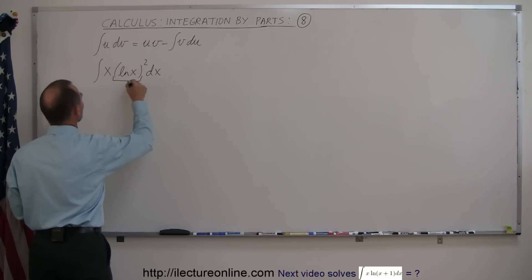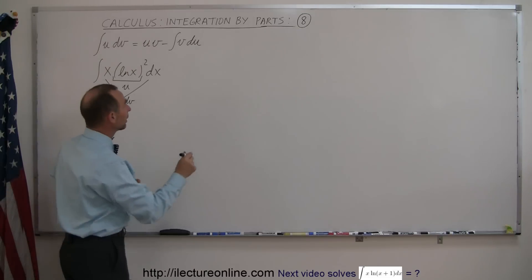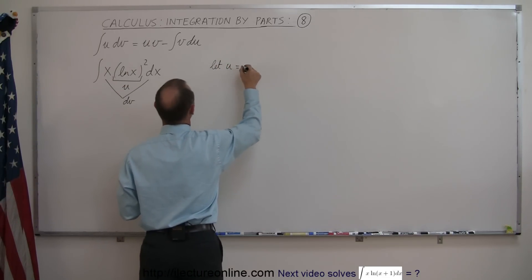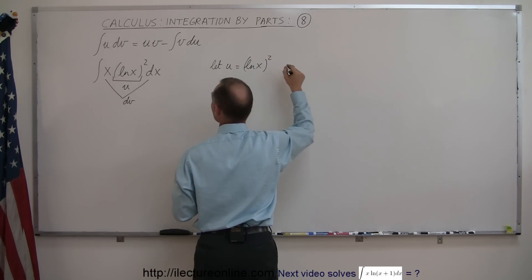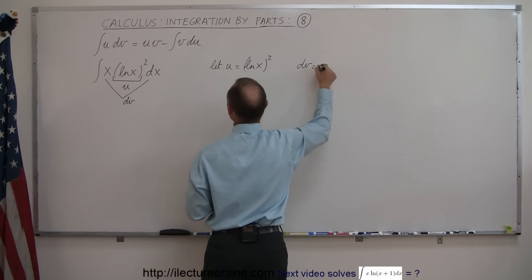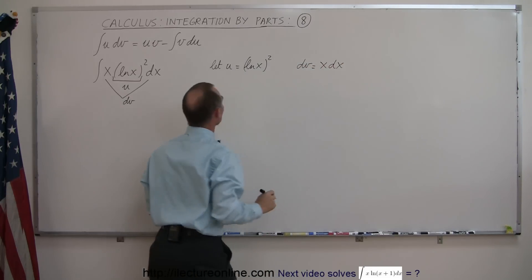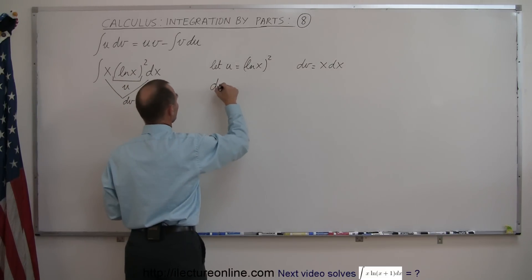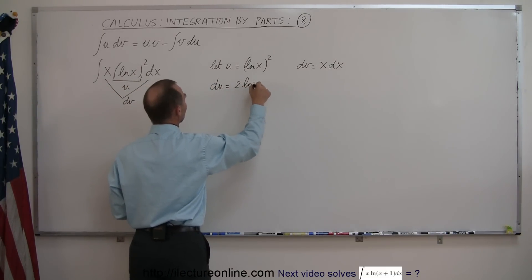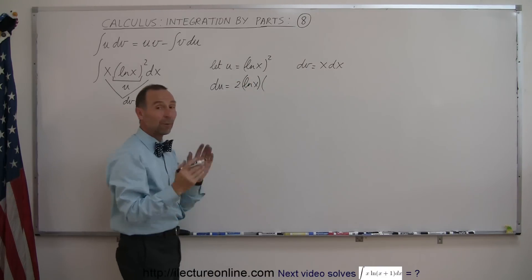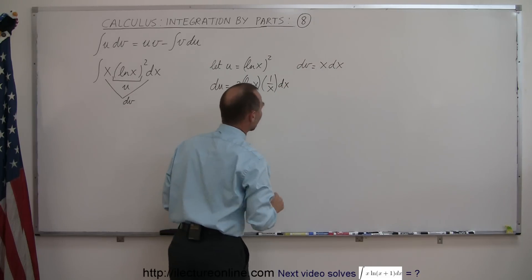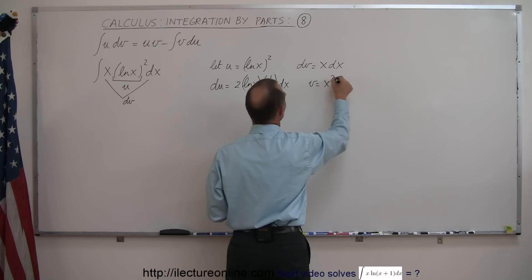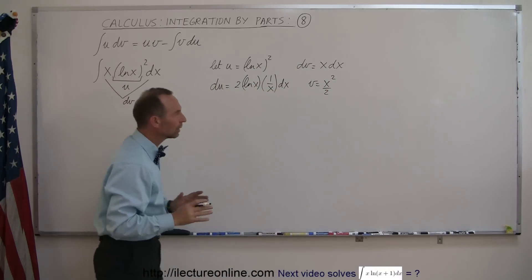I'm going to call this portion u, and then x times dx we're going to call dv, and see what we end up with. Let u equal the natural log of x quantity squared, and the dv is going to be x times dx. So du would be 2 times the natural log of x, times the derivative of what's inside the parentheses, which is 1 over x, times dx. And when we integrate dv, we get v, which is equal to x squared over 2.